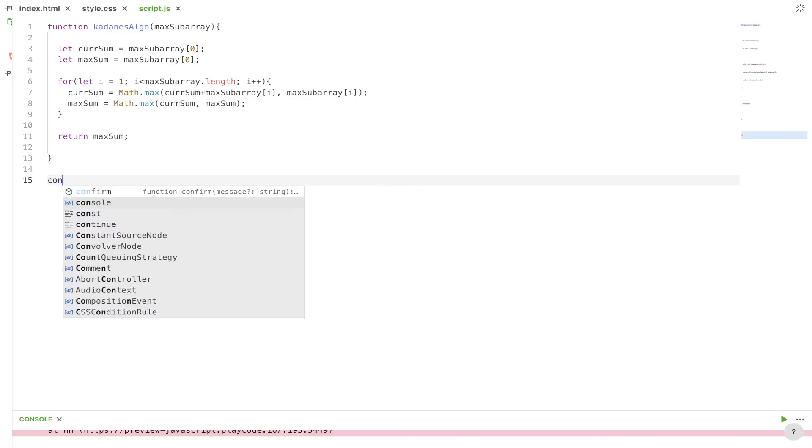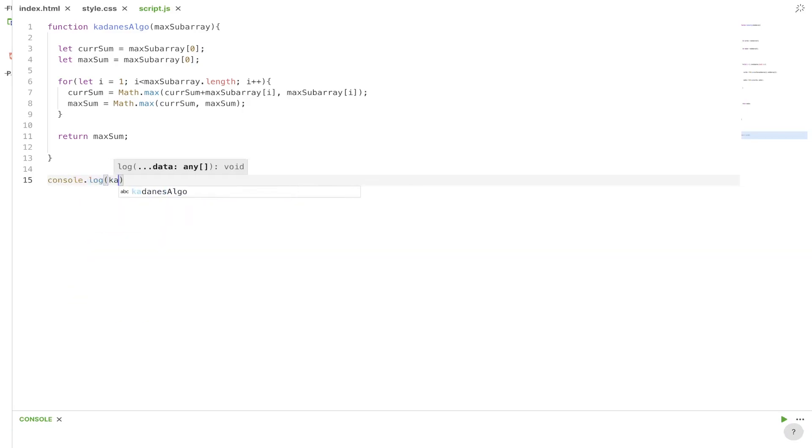So the output we're looking for is 6. So if we console log Kadane's algo, passing in the input array we used in our example, and now checking the console. As you can see, we've got the correct answer, and that is Kadane's algorithm in a nutshell.